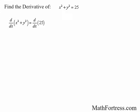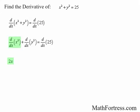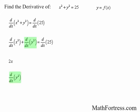Taking the derivative of both sides, when using Leibniz notation, the expression d/dx can be treated as an operator. We distribute d/dx over x squared and y squared. The derivative of x squared is simply 2x. The derivative of y squared is a different story — remember that y is a function of x, so here we actually have to use the chain rule. We can rewrite the derivative of y squared as the derivative of f(x) raised to the power of 2.